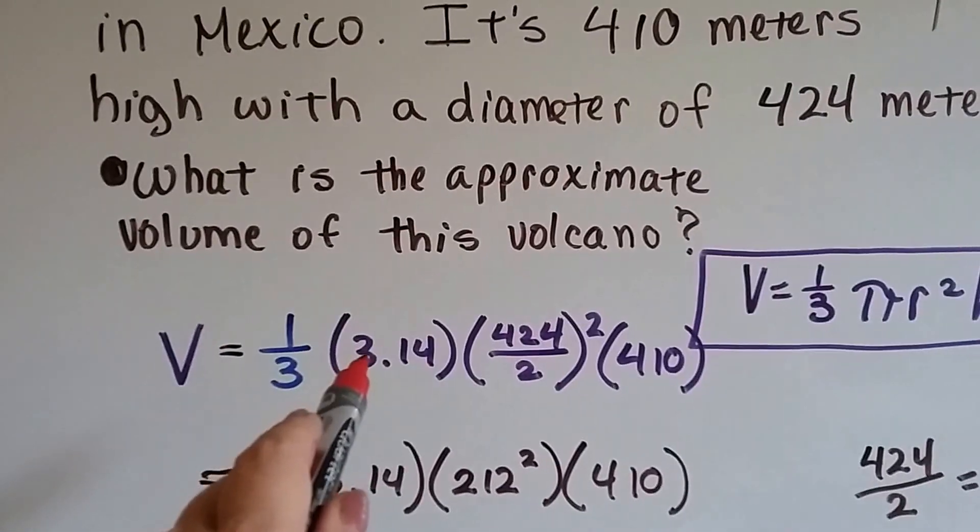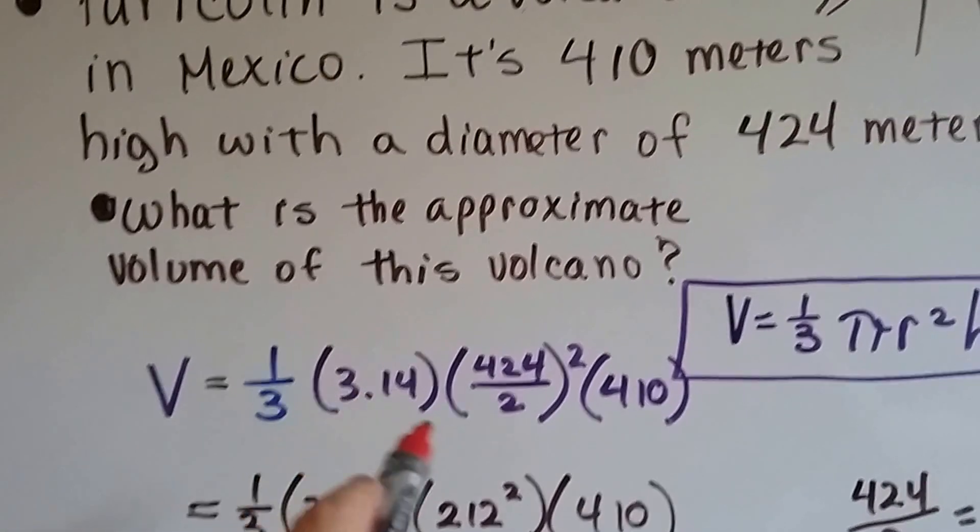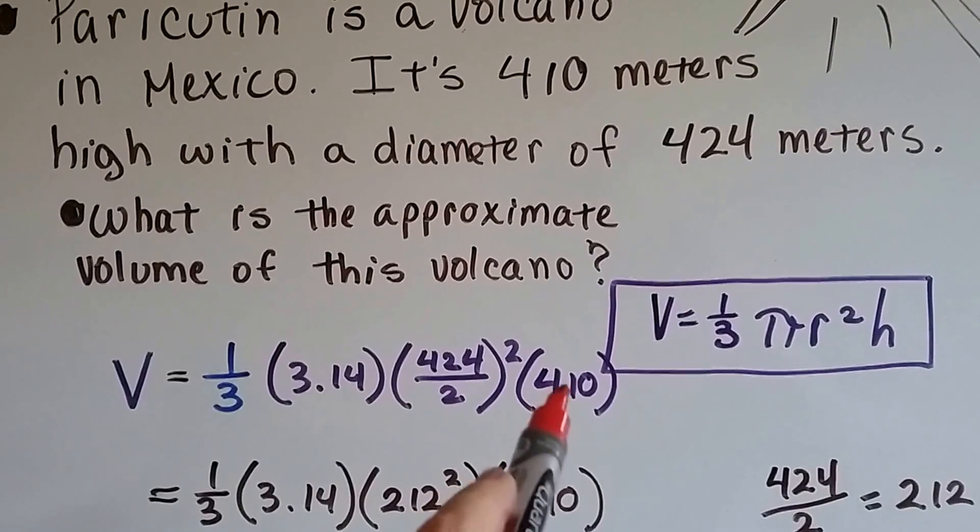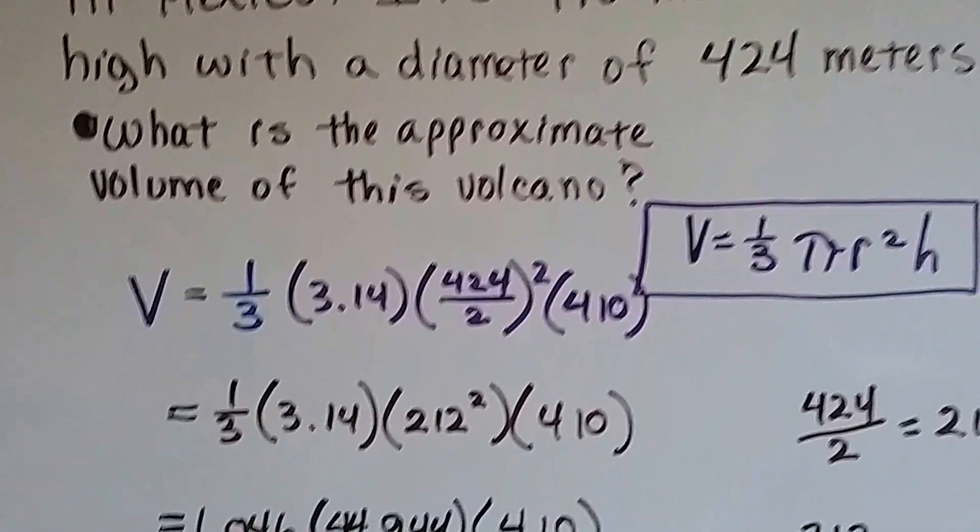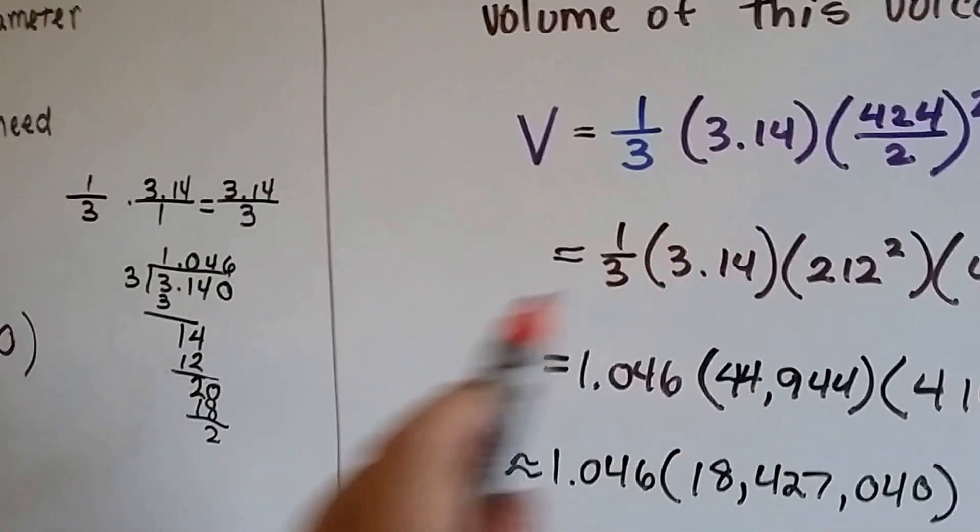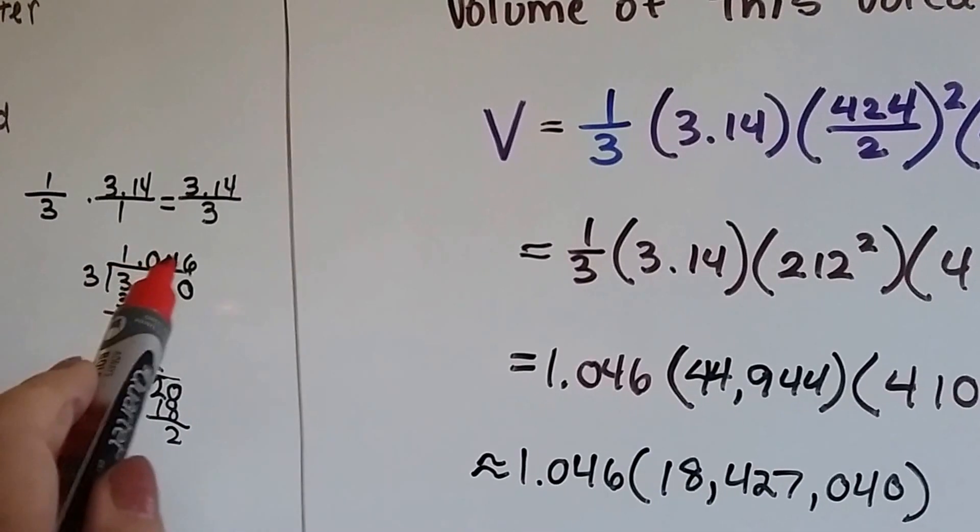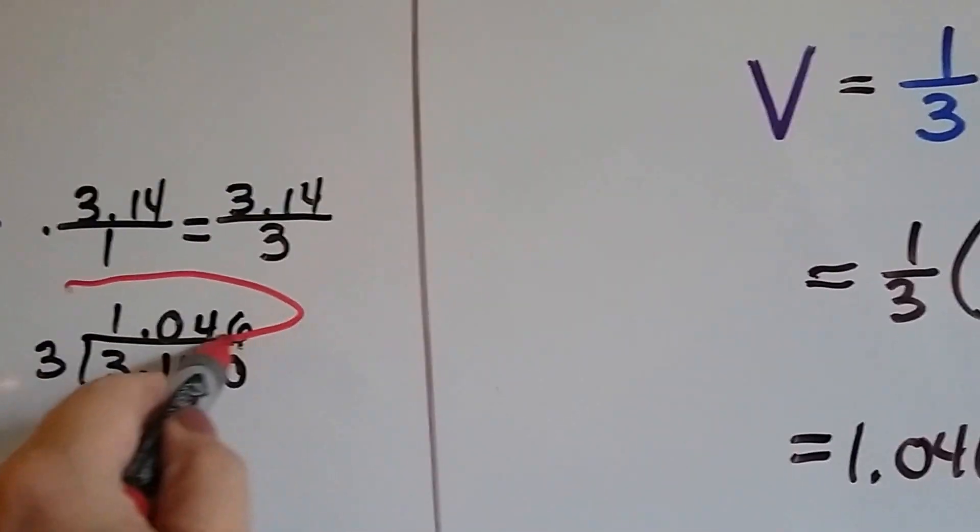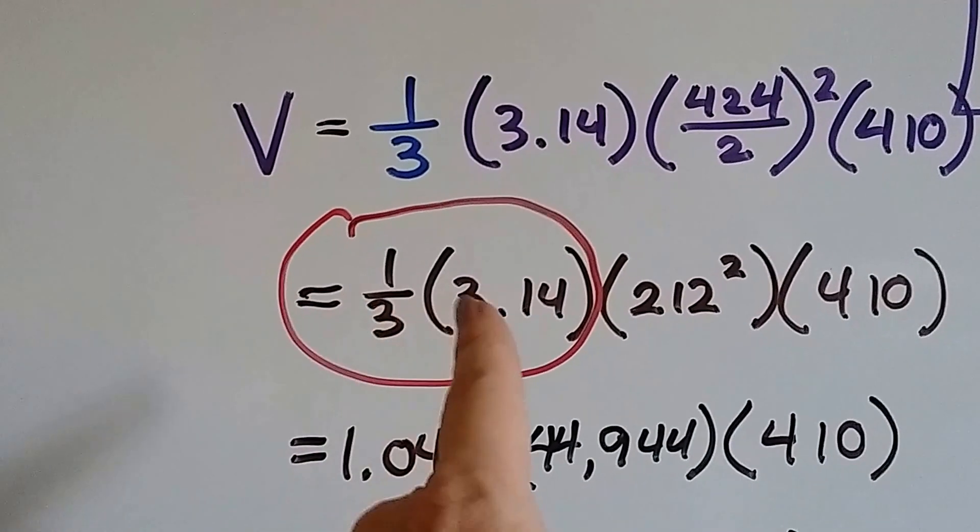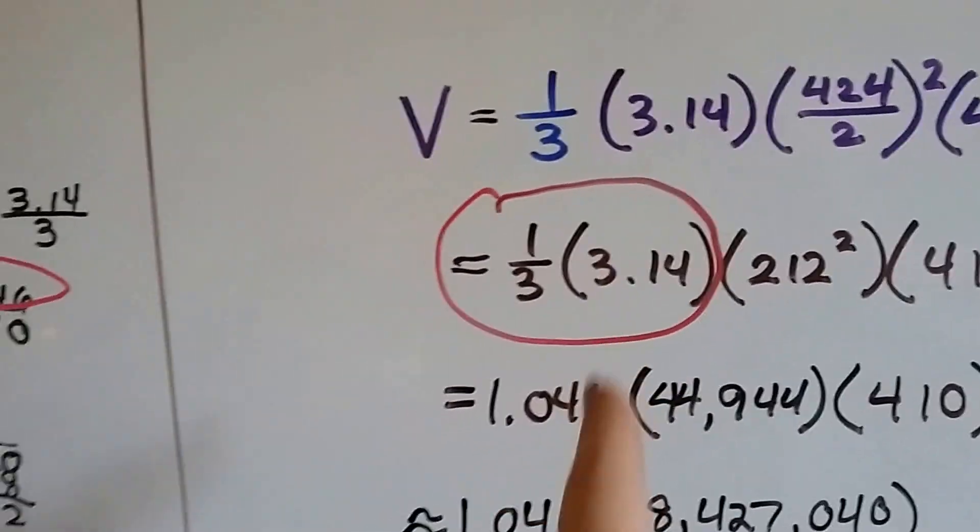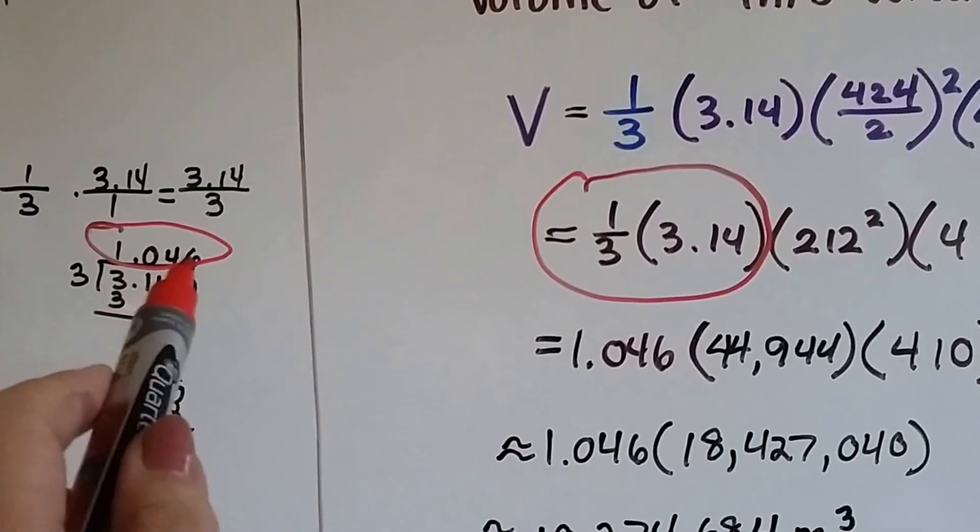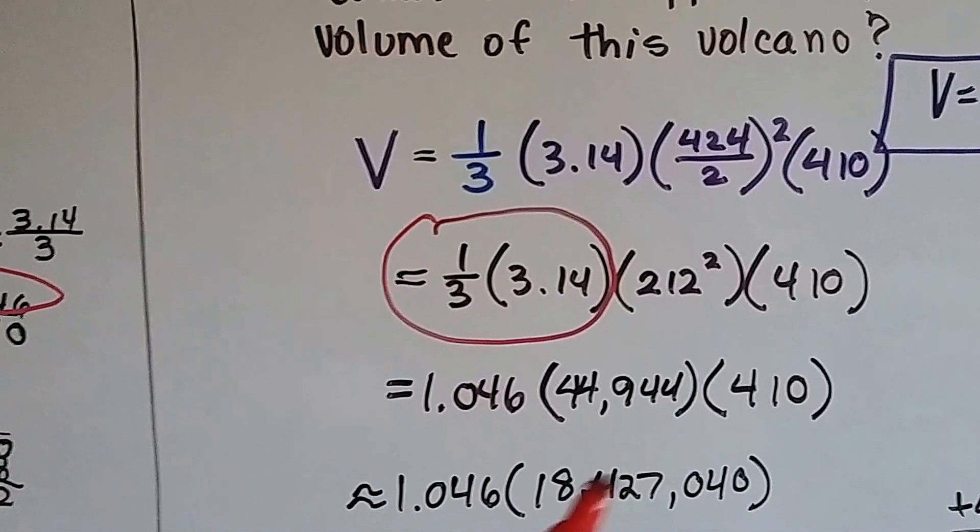So we've got our one third and our pi 3.14. We've got our diameter divided by 2 and squared, and here's our height of 410 meters. So just like we did in the last problem, we know that one third times pi is 1.046. Now if you write that down, that's going to help you a lot, because when you're doing volume of a cone, you're going to be doing one third times pi a lot. So if you can just write somewhere in your notes that one third times pi is 1.046, you're going to save yourself a lot of math work.